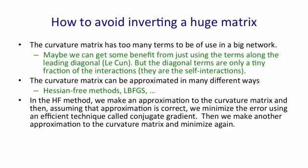In the Hessian-free method, we make an approximation to the curvature matrix and then we assume that the approximation is correct. So we assume we know what the curvature is and that the error surface really is quadratic. And then, starting from wherever we are now, we minimize the error using an efficient technique called conjugate gradient. Once we've done that, once we've got close to a minimum on this approximation to the curvature, we then make another approximation to the curvature matrix and we use conjugate gradient to minimize again.